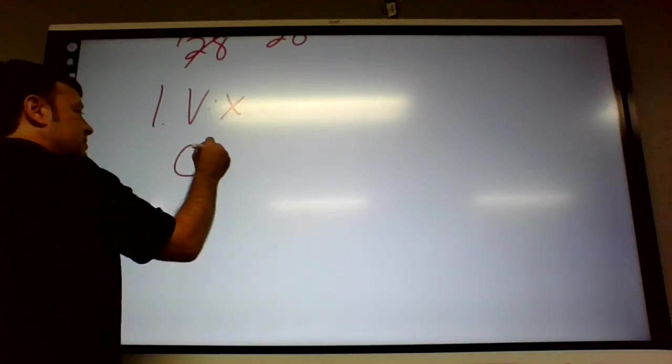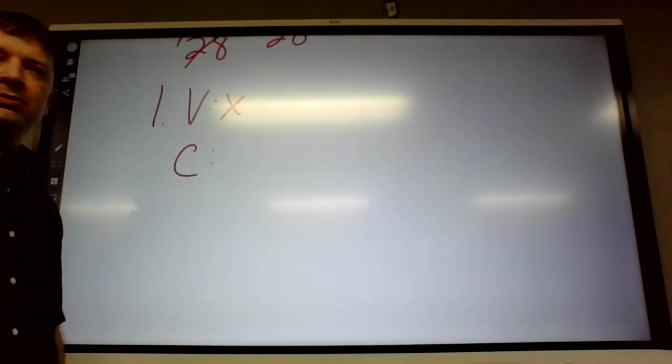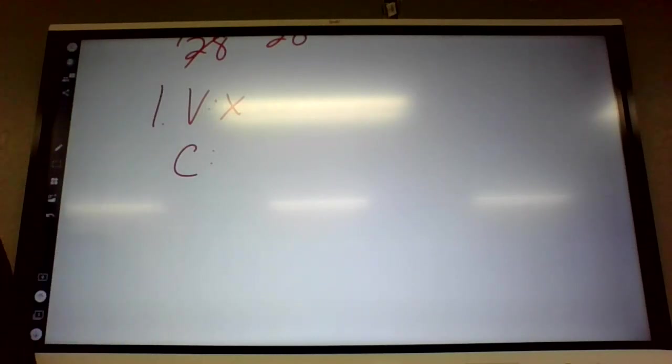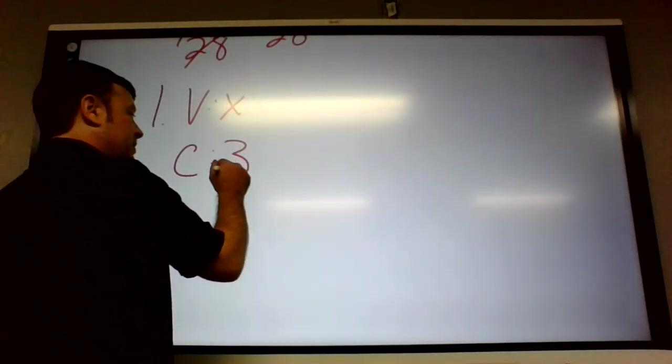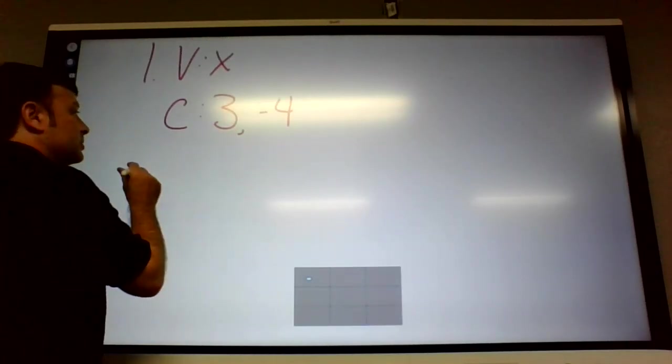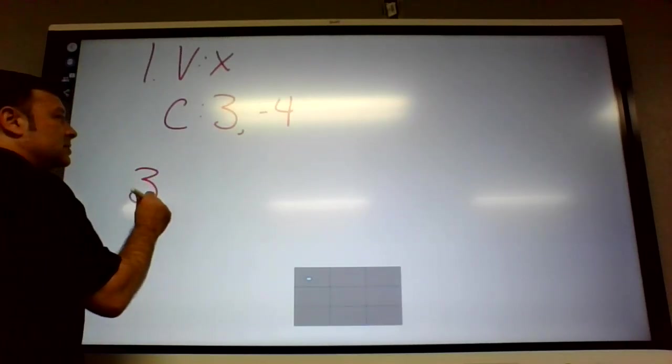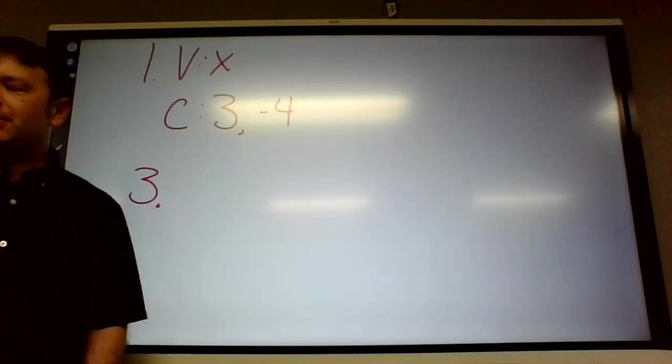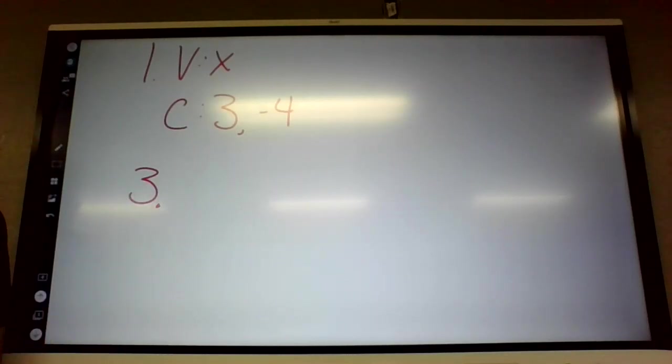And the constants are? 3 and negative 4, or 3 and 4. Yeah, negative 4 would actually probably be a better way to think of that number. I'm going to put negative 4. So constants are just the numbers.